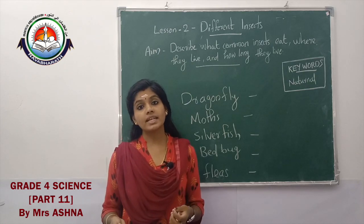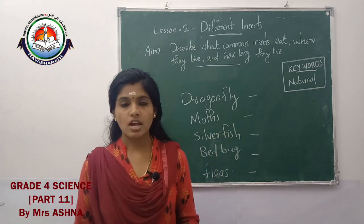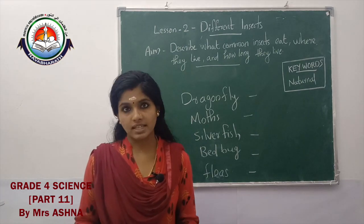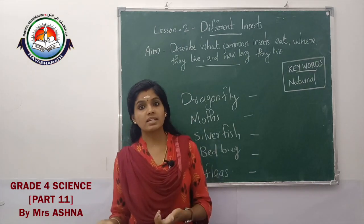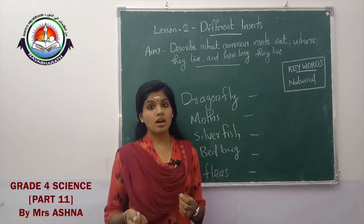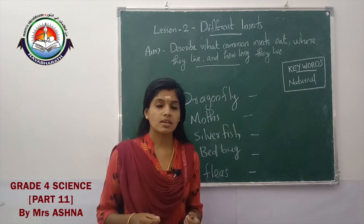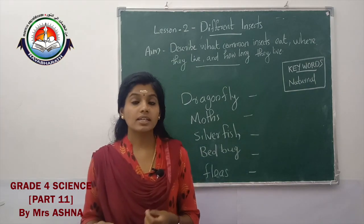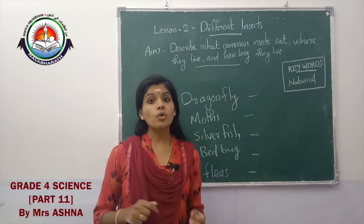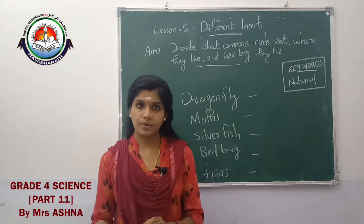What did you learn from the reading? These five insects are mentioned in the textbook. We are going to study where they live, what they eat, and other things — discussing the similarities and differences of these insects. First, dragonfly. Where do dragonflies live? Dragonflies live near ponds, lakes, and streams. What do they eat? They eat ants, mosquitoes, and other small insects. Different types of dragonfly live for different periods of time.